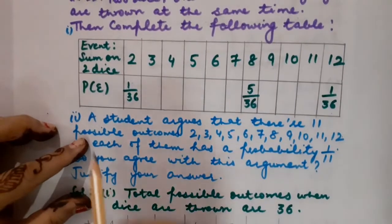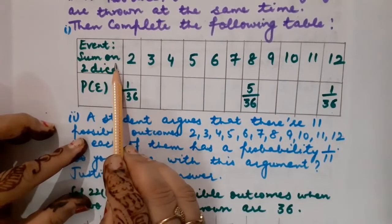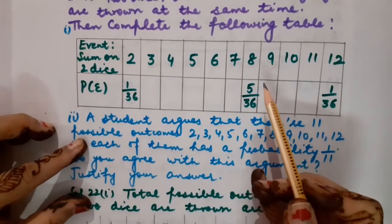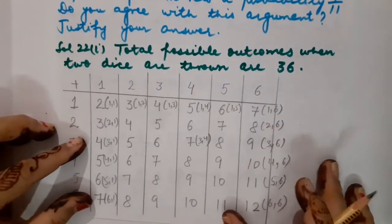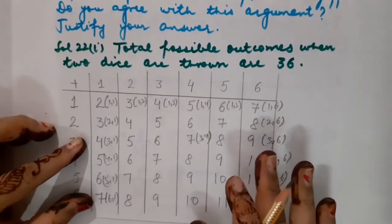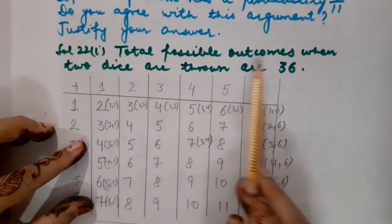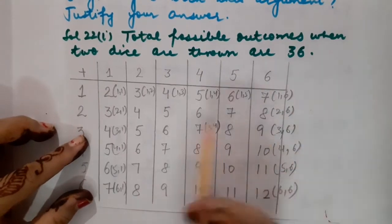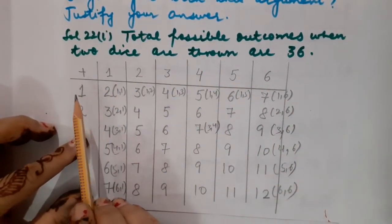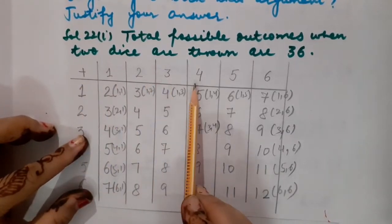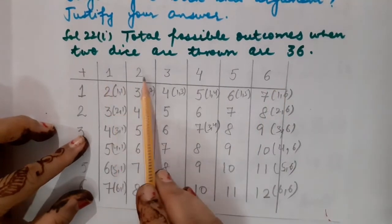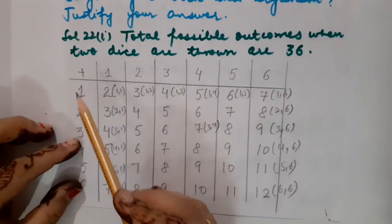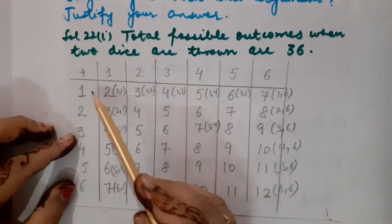As per the demand of the question, the event says the sum on two dice should be 2, or 3, then 4, then 5 — so for each case we have to find out the probability. Total possible outcomes when two dice are thrown are 36. In the very first row, write the digits on the first die: 1, 2, 3, 4, 5, and 6. In the very first column vertically, also write 1 to 6.